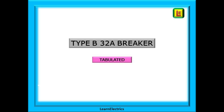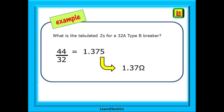Let's take our type B 32 amp breaker and quickly calculate the tabulated value without using any books. And there is no excuse for not having a calculator — you might leave your books at home but who leaves their mobile phone behind? Take the number 44 and divide it by 32. We have an answer of 1.375, which we can round down to 1.37 ohms. The maximum tabulated ZS for a 32 amp type B breaker is 1.37 ohms.